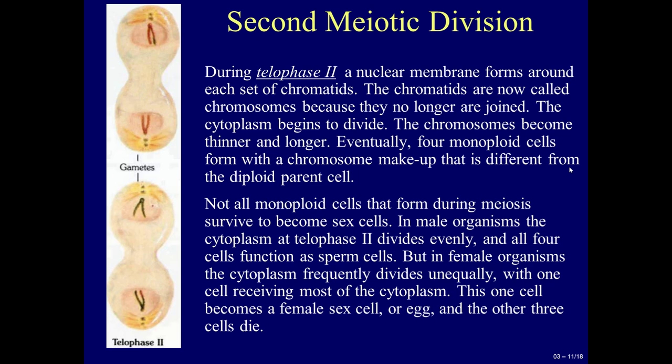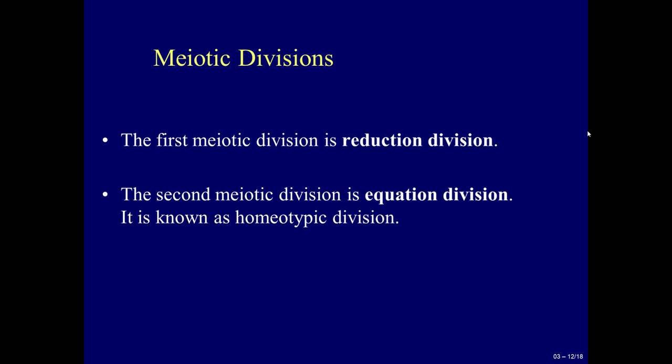Not all monoploid cells that form during meiosis survive to become sex cells. In male organisms, the cytoplasm at telophase II divides evenly, and all four cells function as sperm cells. But in female organisms, the cytoplasm frequently divides unequally, with one cell receiving most of the cytoplasm. This one cell becomes a female sex cell or egg, and the other three cells die. The first meiotic division is called reduction division. The second meiotic division is called equational division, also known as homeotypic division.